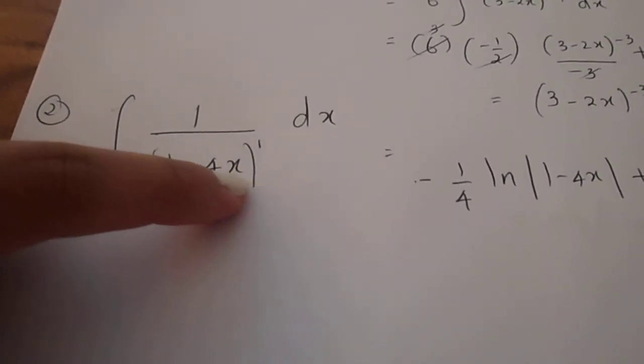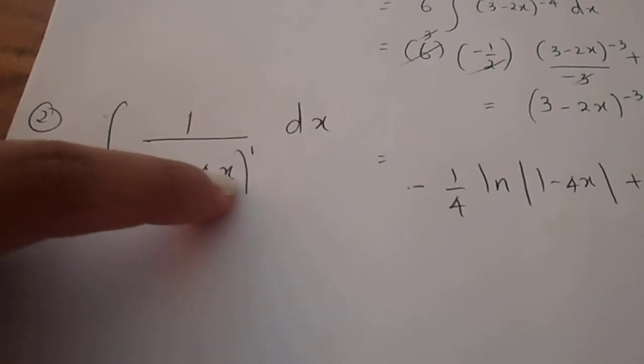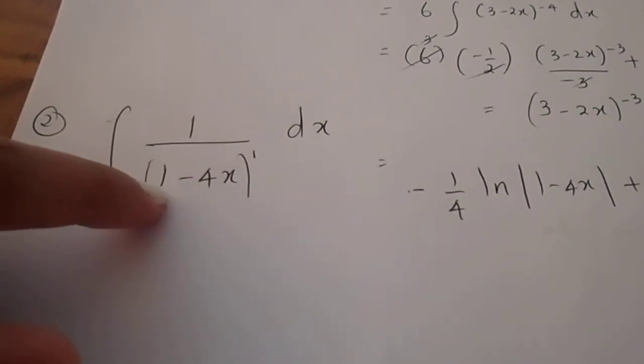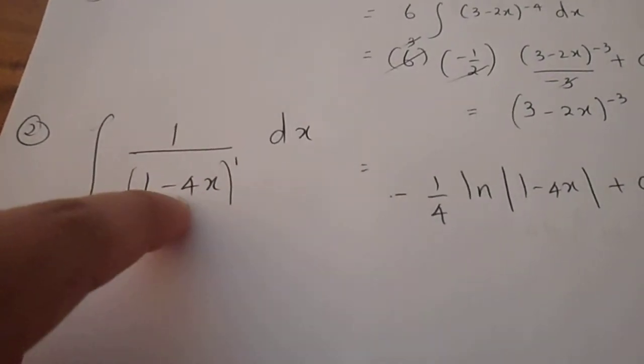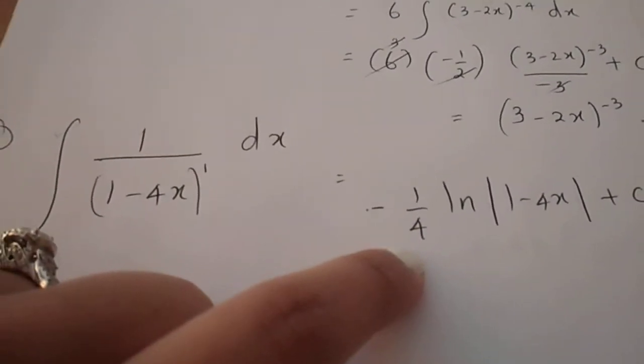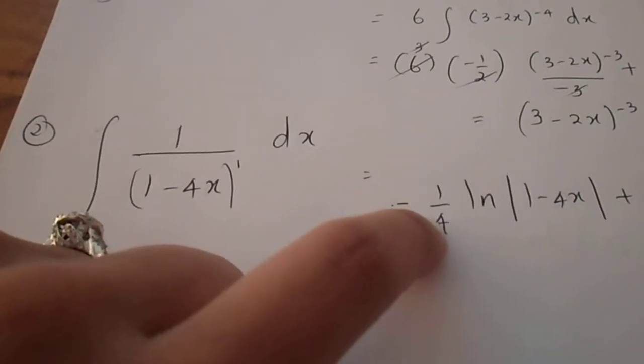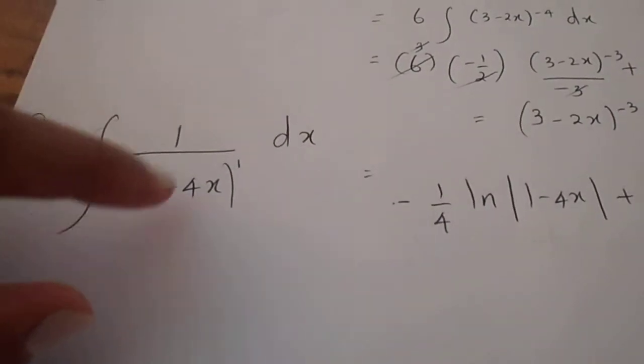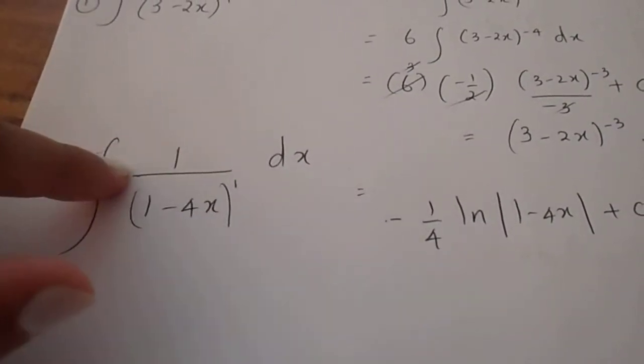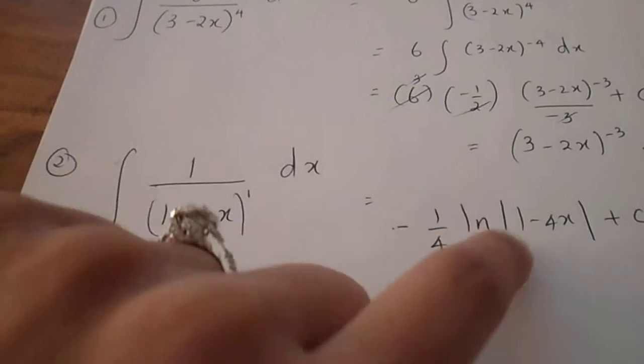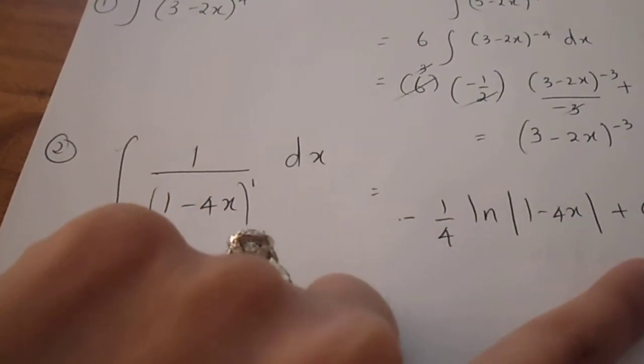What you need to do is apply the chain rule integration method straight to this denominator. When you differentiate 1 minus 4x, you will be left with minus 4. But don't fail to reciprocate your derivative. So I'm left with minus a quarter.